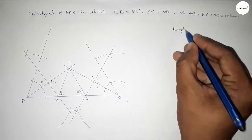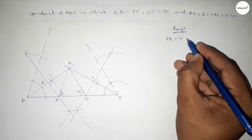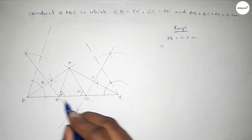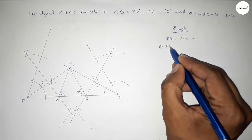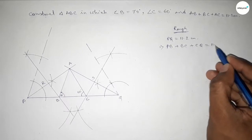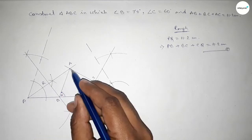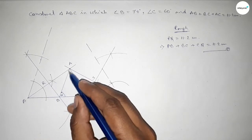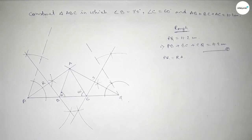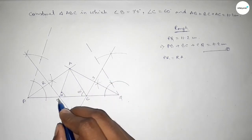Now roughly discussing here some calculation. Given PQ equals 11.2 centimeters. Now we can write PQ as PB plus BC plus CQ equals 11.2 centimeters. This is relation number one. Now the line PA is bisected by perpendicular bisector RS into two equal parts.